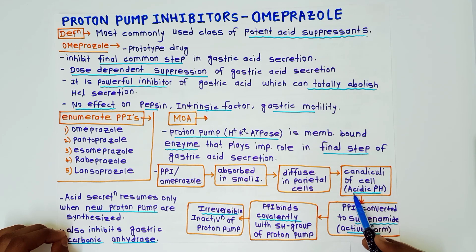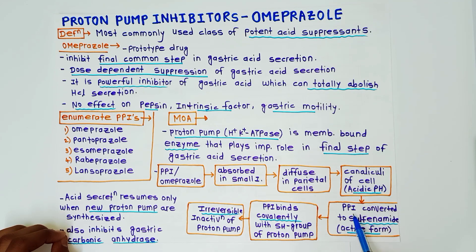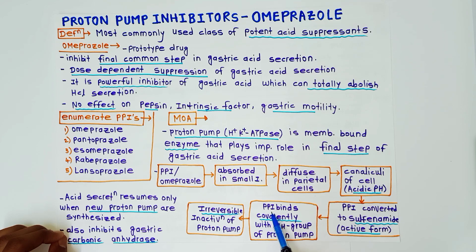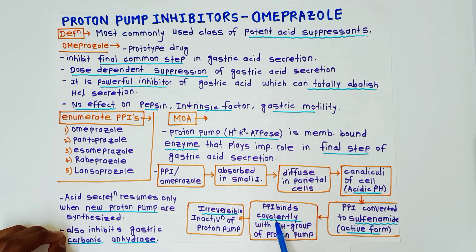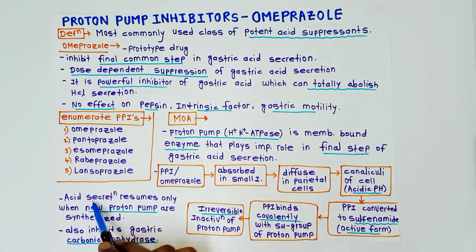In the canaliculi, the acidic pH is required for activation of the drug. Proton pump inhibitors are converted to sulfenamide, which is the active form of PPIs. The PPI then binds covalently with the SH group of the proton pump — the covalent bond is important — causing irreversible inactivation of the proton pump. Acid secretion resumes only when new proton pumps are synthesized.